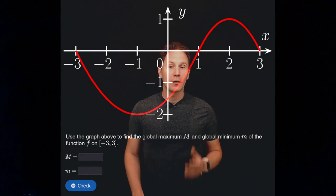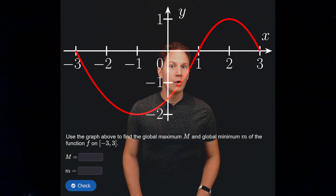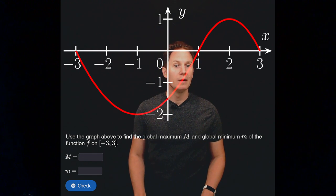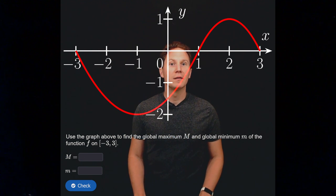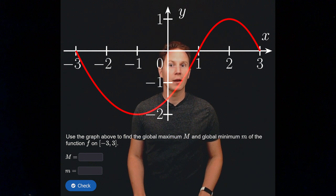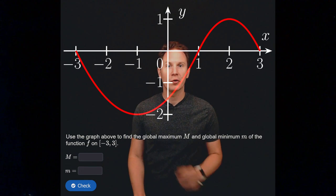Use the graph above to find the global maximum capital M and the global minimum little m of the function whose graph you see on the closed interval between negative 3 and 3. So pause the video and input your answers in the box.